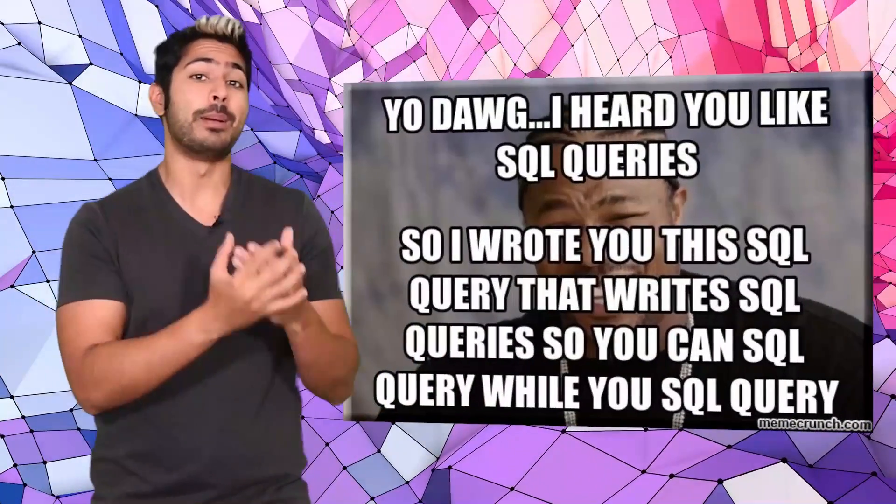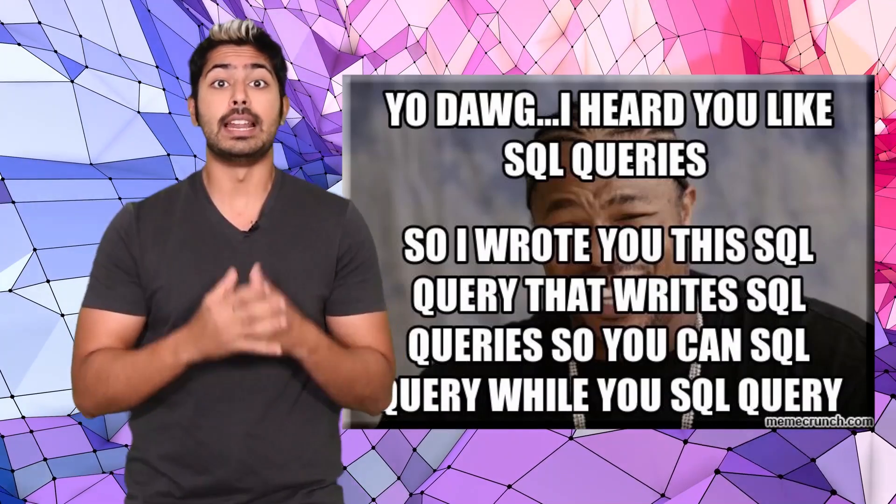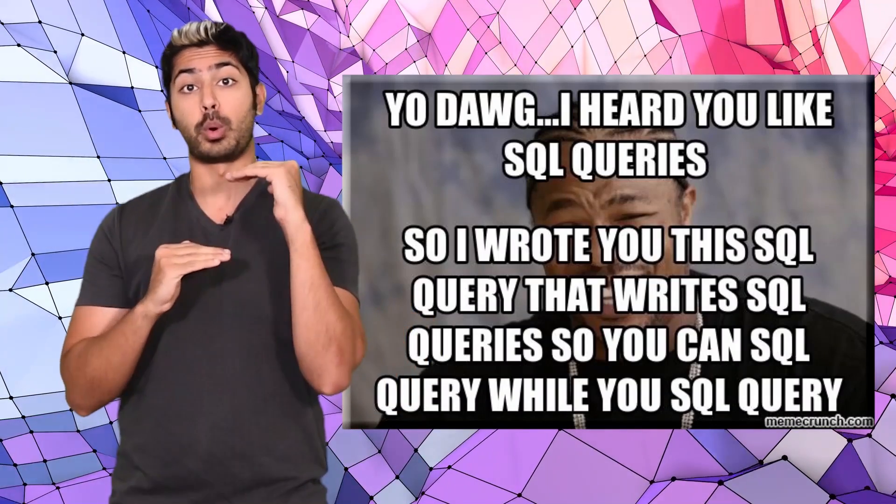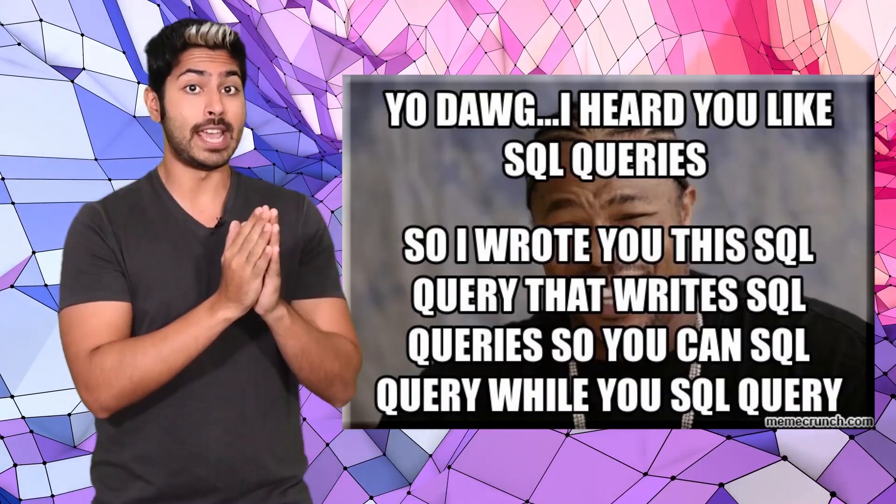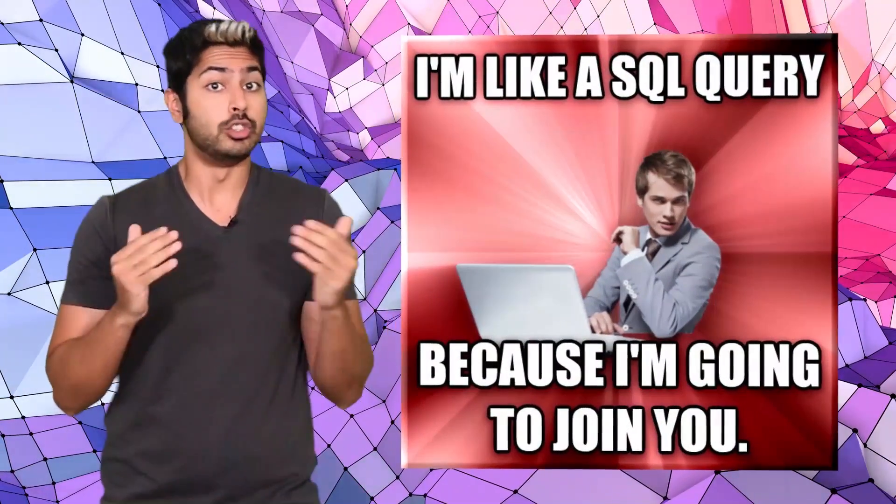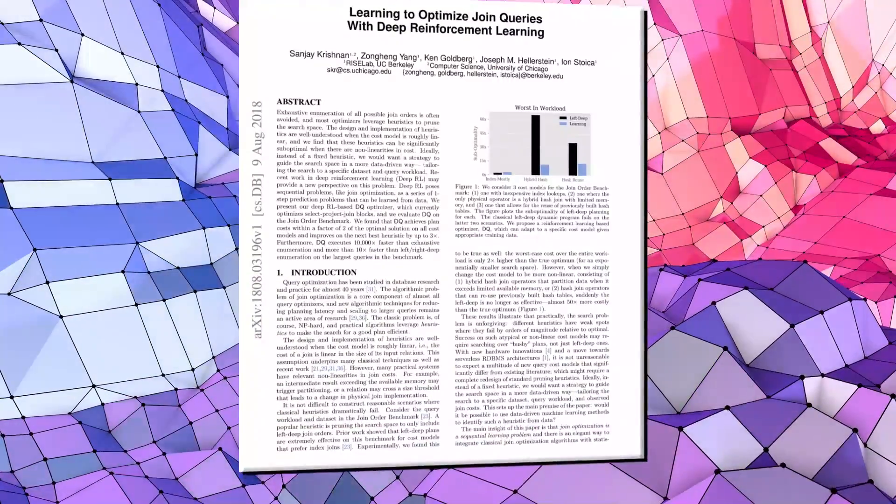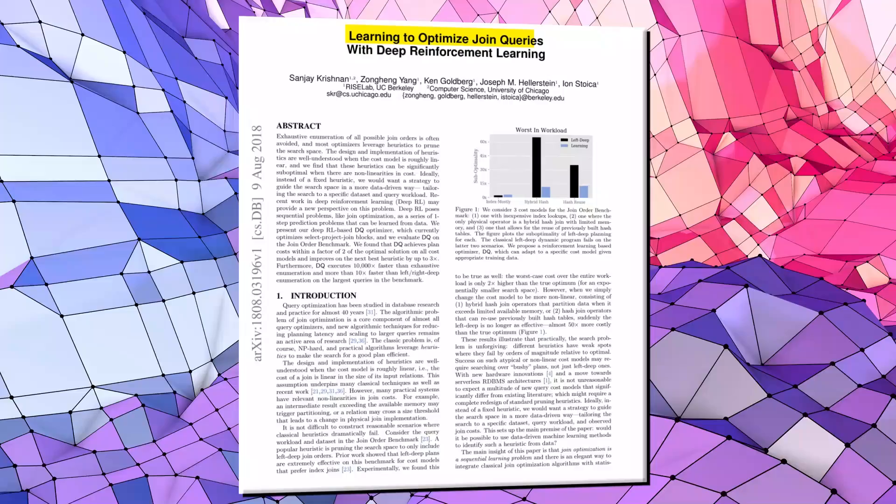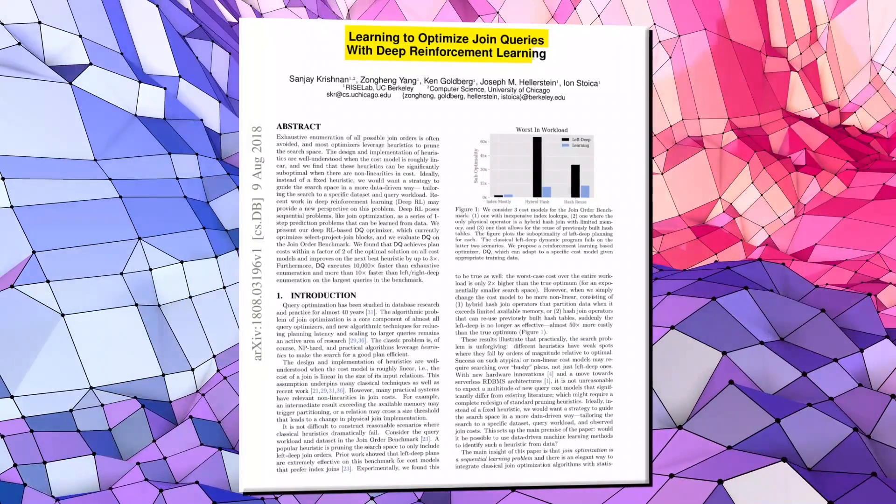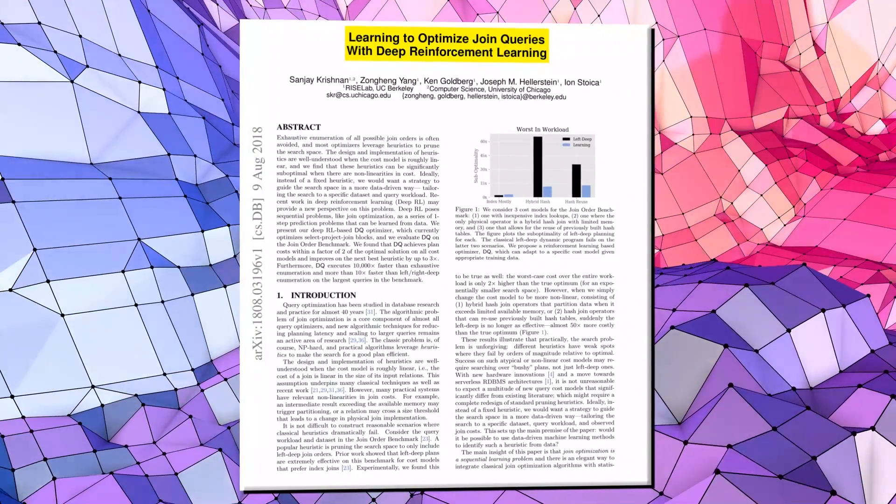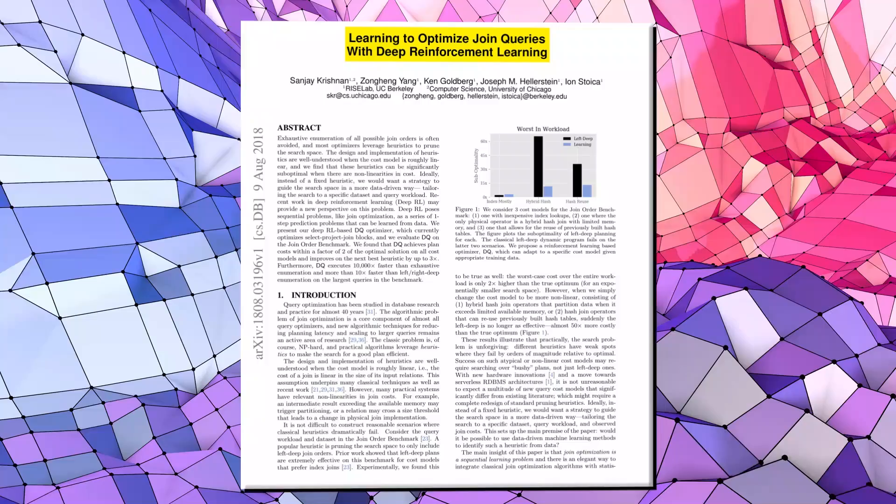Each query takes a certain amount of time to compute, and ideally, we can order our queries in the most computationally efficient way. There are several techniques to do this, and usually, reinforcement learning isn't considered one of them, but a recent paper showed that using a deep queue network, researchers were able to perform queries twice as fast as using standard techniques.